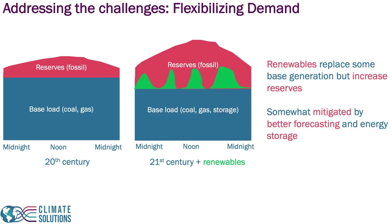When you add renewables, you're able to replace some of the base load, but you have to add additional reserves. We discussed how energy storage and better forecasting can potentially reduce these reserves. But energy storage is still going to be an expensive technology, and forecasting has its limits based on the amount of sensing and information that you have available. So what else could you do?